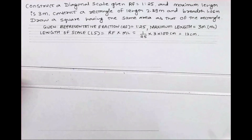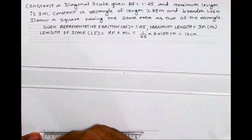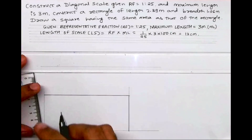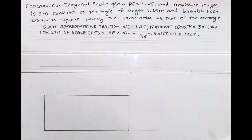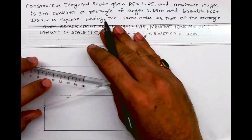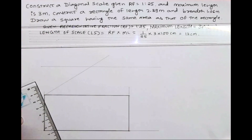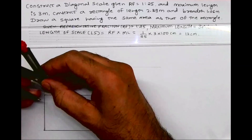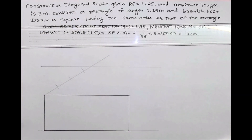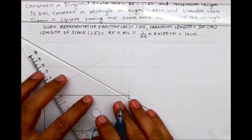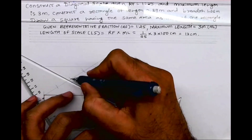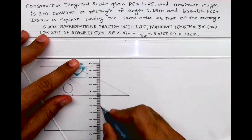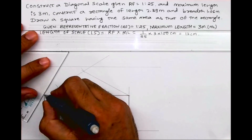I'll start from here. I'll draw a 12 centimeter line and take a height of 5 centimeters. After drawing this box, we'll divide it into 3 parts because the maximum length is 3 meters. So we'll divide this line into 3 equal parts, and then we'll divide the first block into 10 parts.